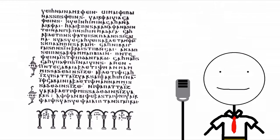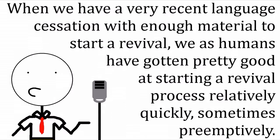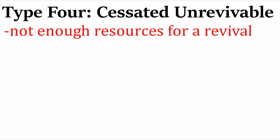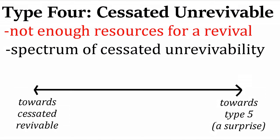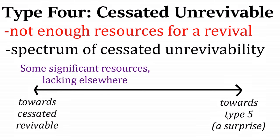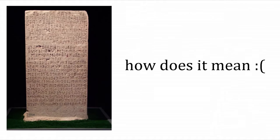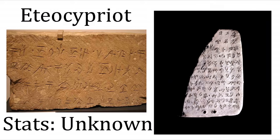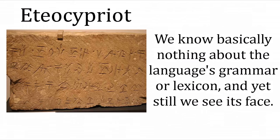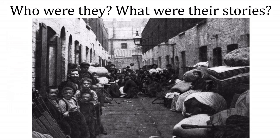I prefer 'cessated' because it does not imply that the speaker community is productive or unproductive — it just doesn't exist anymore. A 'cessated revivable' language has no L1 or L2 speaker community but has enough resources to theoretically bring the language back in a mostly original form — Gothic would go here. A 'cessated unrevivable' language simply doesn't have enough material to bring it back. This is a spectrum: some languages might have a relatively complete grammar but not enough vocabulary. We can't bring back Etruscan — we simply don't have enough words. There are also languages known only from a few bilingual inscriptions, like Eteocypriot.